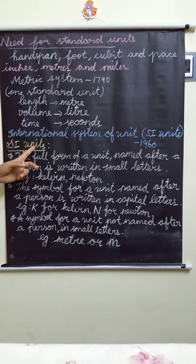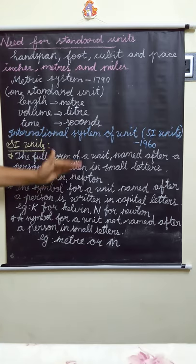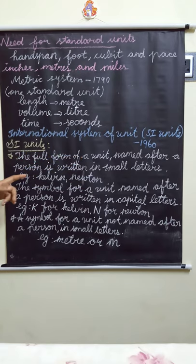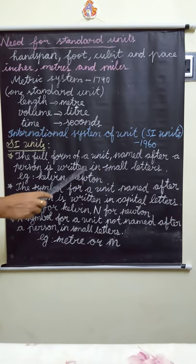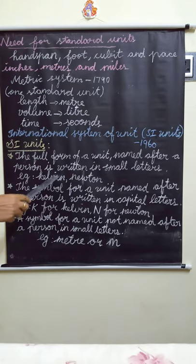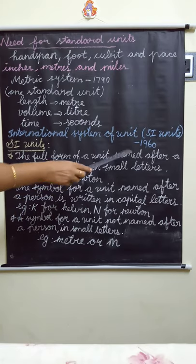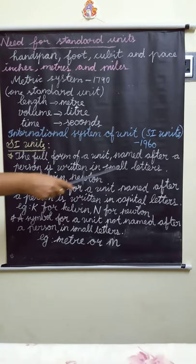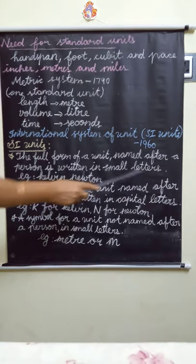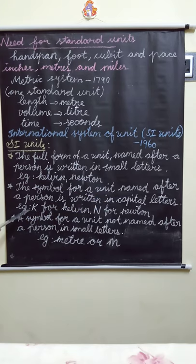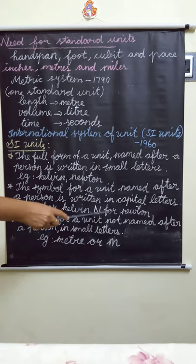Next topic is SI units. Using the SI units, the following rules should be kept in mind. First: the full form of a unit named after a person is written in small letters. Example: kelvin, newton. Second: the symbol for a unit named after a person is written in capital letters. Example: capital K for Kelvin, capital N for Newton.